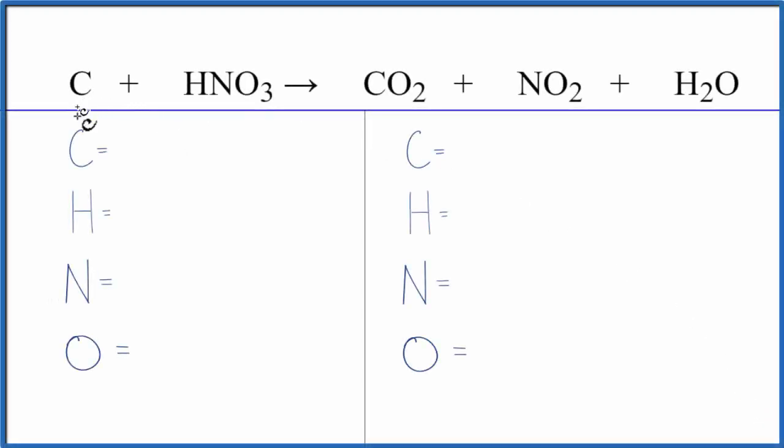In this equation we have carbon plus nitric acid, C plus HNO3, and the carbon is probably going to be in the form of graphite. This is a bit of a tough equation to balance, primarily because we have all these different oxygens here with the different compounds. That can make it quite hard, but let's see what we can do.